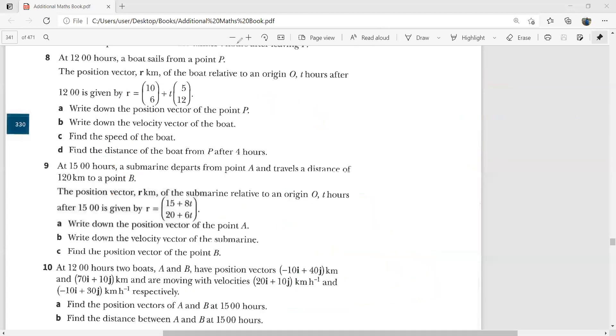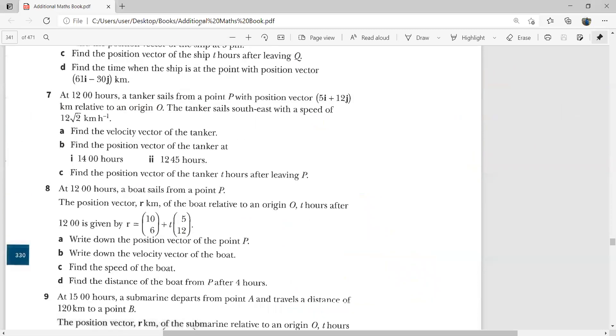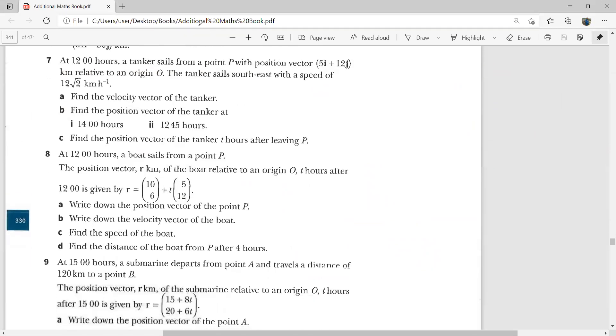Now you can manage all these questions. I have to tell you in the next video, I'll be doing this question number seven. And why I'm going to do this separately. It says at 12 hours, a tanker sails from a point P with position vector this, and the tanker sails south east. This time we're not given the velocity vector. We are given the direction separately and the speed separately. So we have to merge them into the vector form. So we shall do that in the next video.